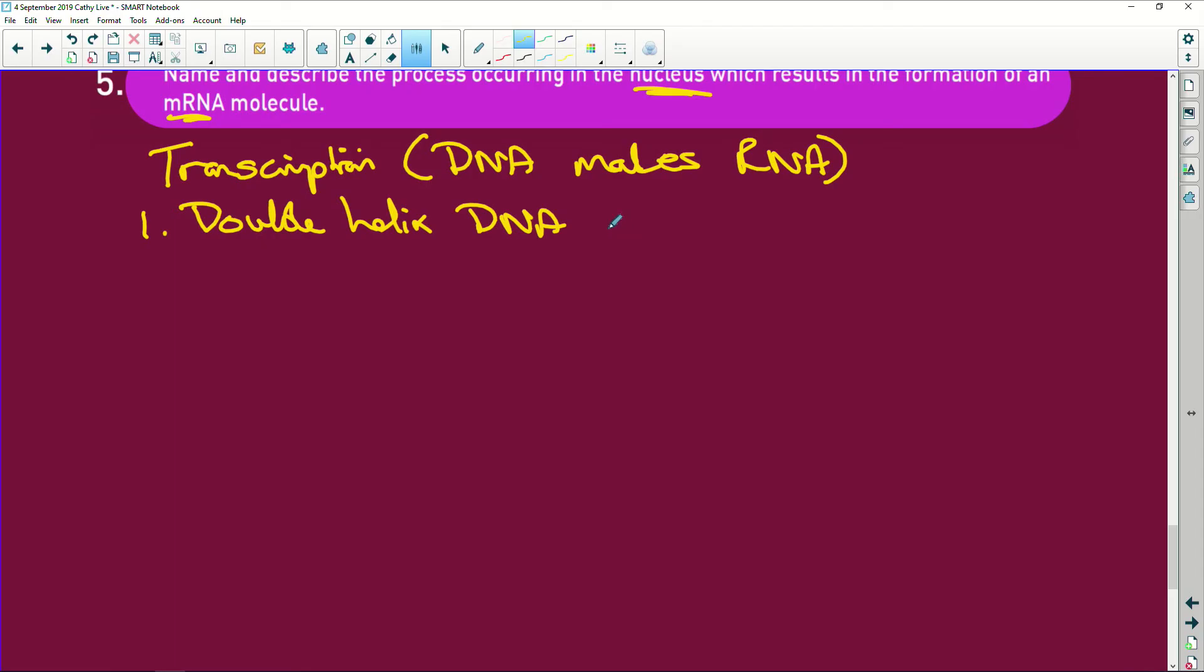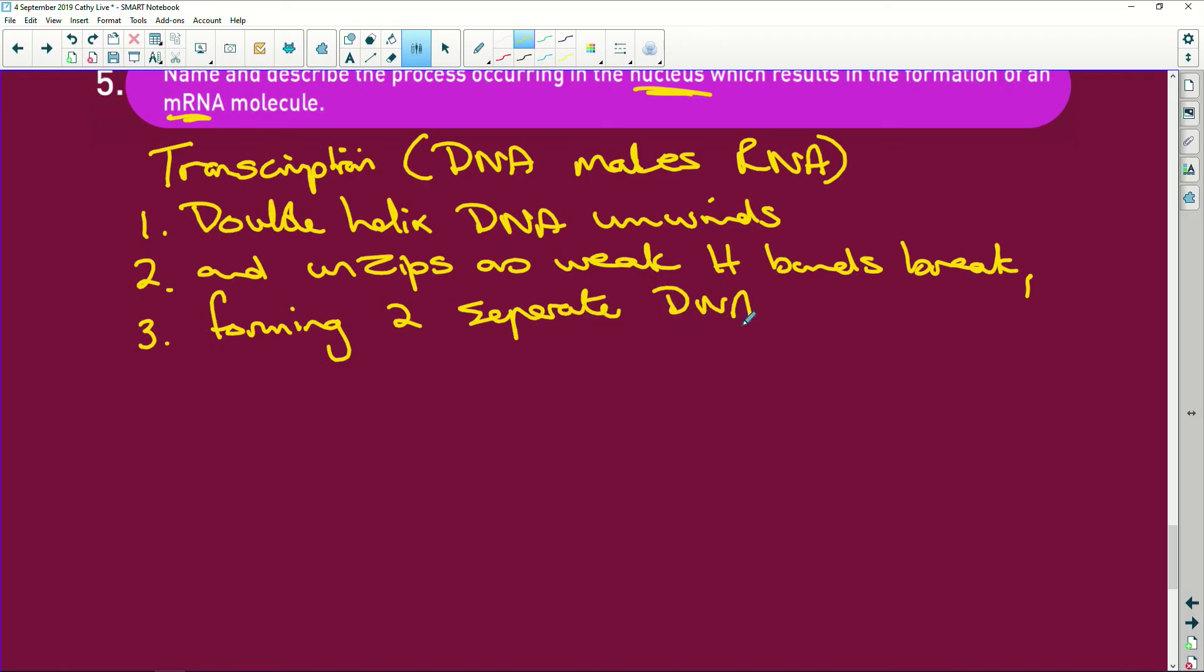And unzips as weak hydrogen bonds break, and that's caused by an enzyme—the enzyme is RNA polymerase, which you don't really need to know—then forming two separate DNA strands.